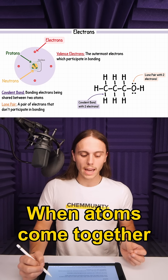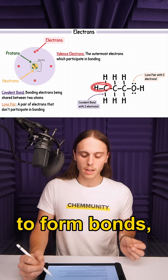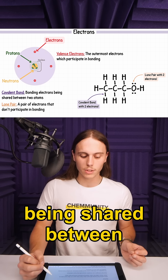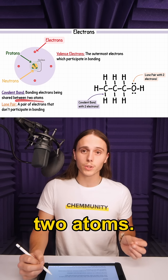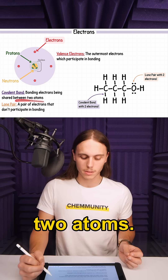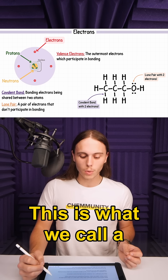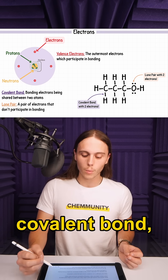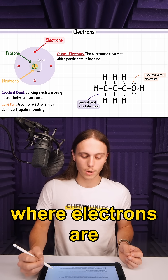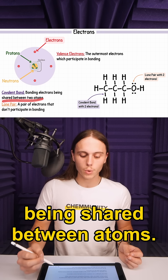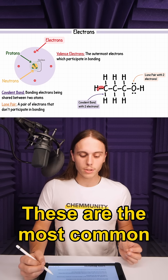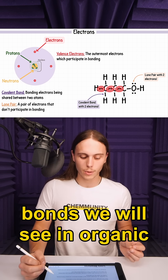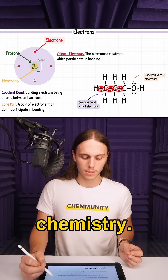When atoms come together to form bonds, those bonds have electrons being shared between two atoms. This is what we call a covalent bond, where electrons are being shared between atoms. These are the most common bonds we will see in organic chemistry.